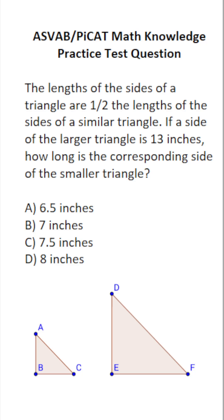So let's say this larger triangle has a side of 13 inches right here. This would be its corresponding side on the smaller triangle. And according to the problem, we know the corresponding side on the smaller triangle is half the length of the larger triangle. In other words, that's going to be 13 times one half.